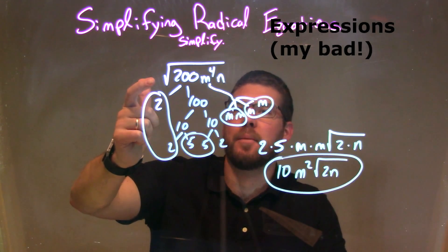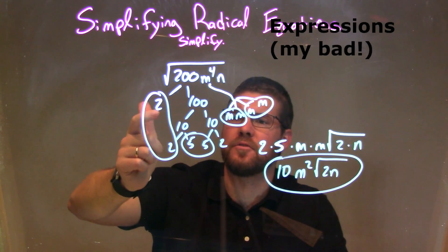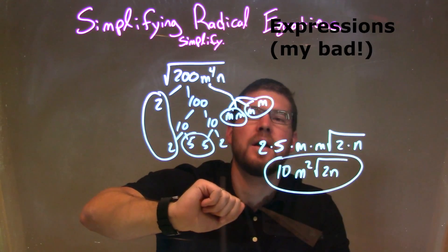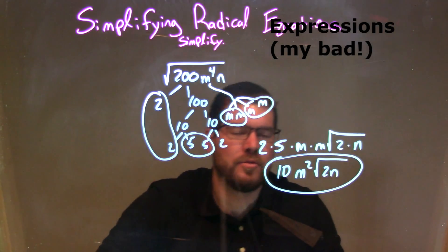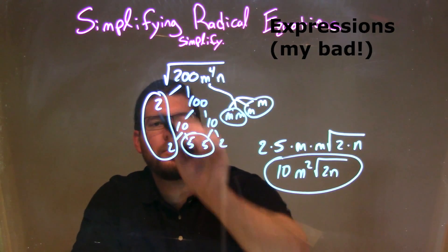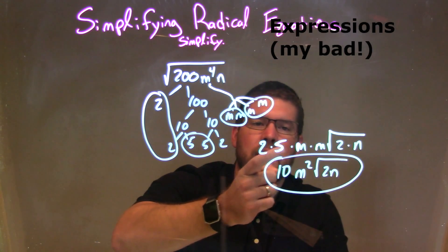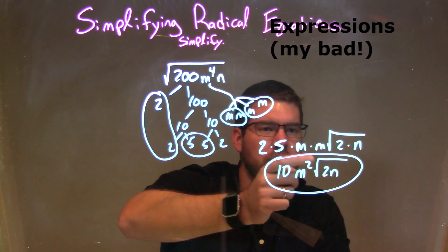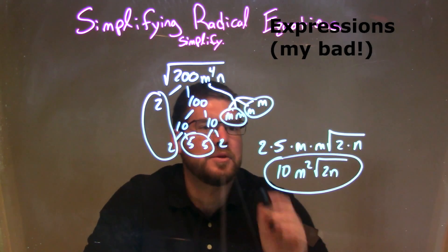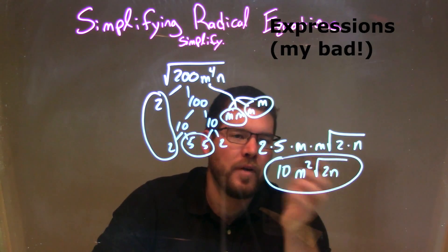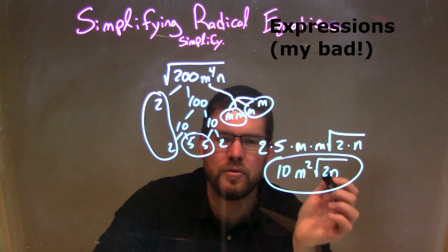Let's recap. We were given the square root of 200 m to the fourth times n, and we needed to do a prime factorization. 200 broke down to be 2 times 2 times 5 times 5 times 2, m to the fourth was m times m times m times m, and n was just by itself. I circled my pairs — a pair of 2s, a pair of 5s, and two pairs of ms. The pairs go outside: 2 times 5 times m times m, and the singles were left inside the square root as 2 times n. Simplified: 2 times 5 is 10, m times m is m squared. Final answer: 10m squared times the square root of 2n.